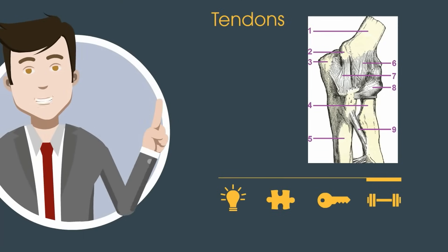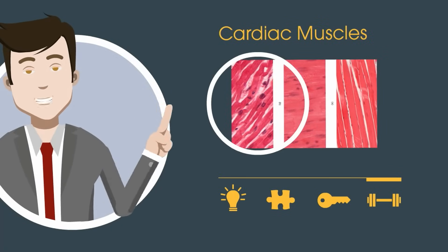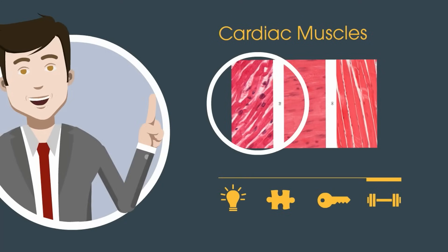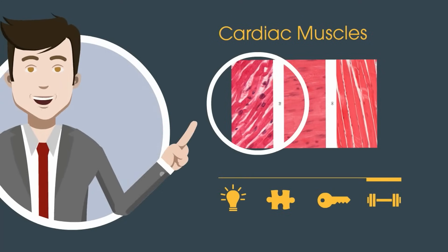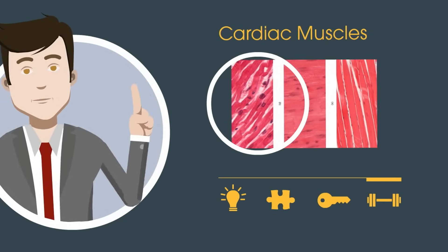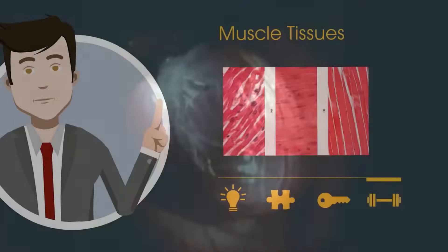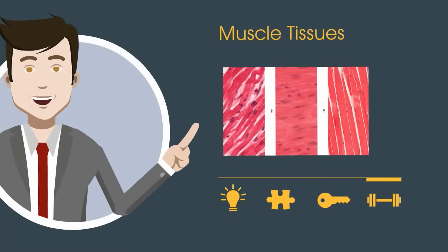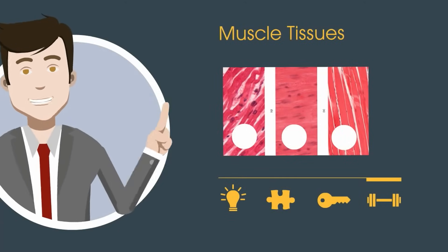Cardiac muscles are striated muscles found in the heart. They are a kind of mixture between smooth and skeletal muscles, and they help the heart pump blood all day. There you go — the three types of muscle tissues: smooth, skeletal, and cardiac.